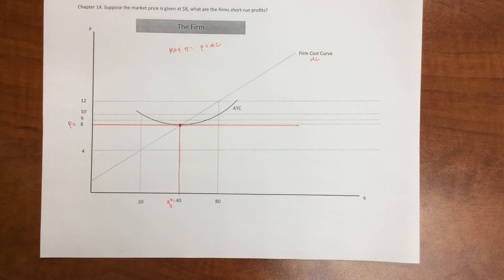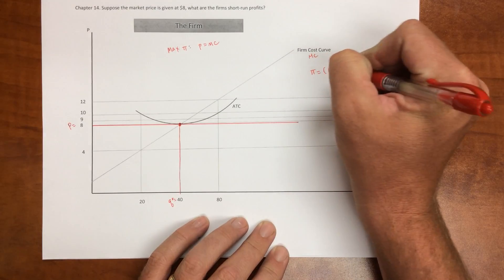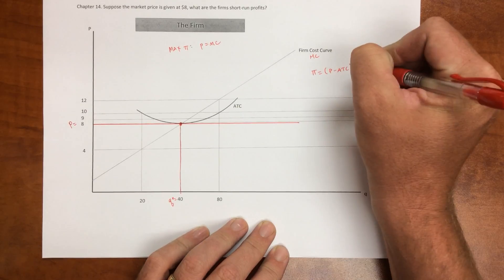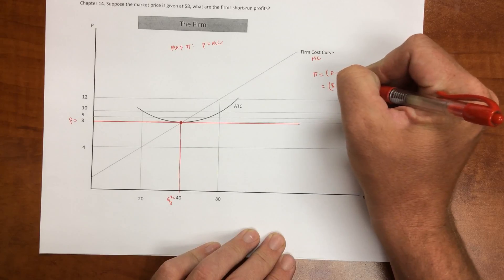But we want to identify the profits. Well, we know profits are equal to price minus average total cost times Q. Well, in this case, price is given at $8. We don't know what average total cost is yet, and Q is 40.